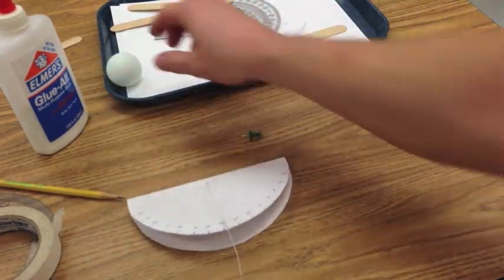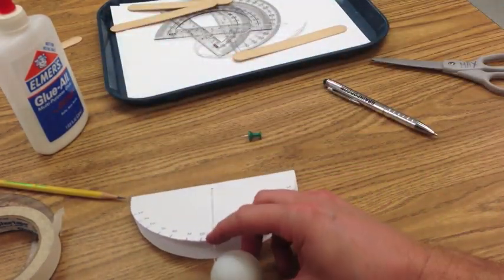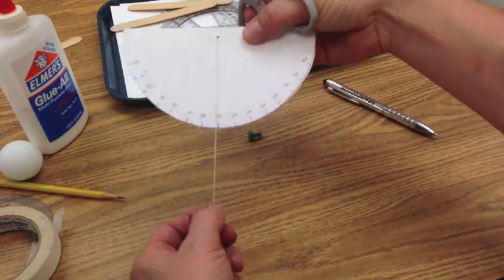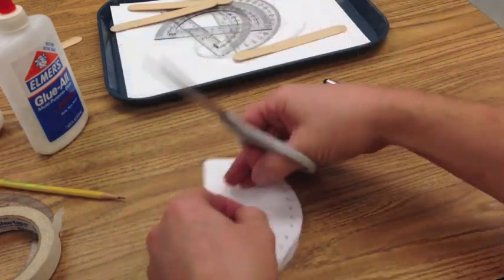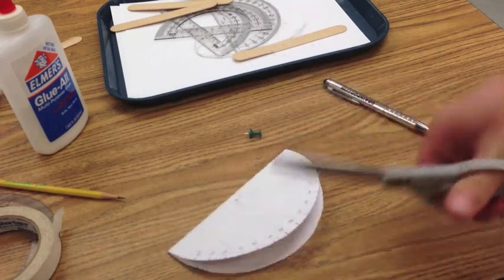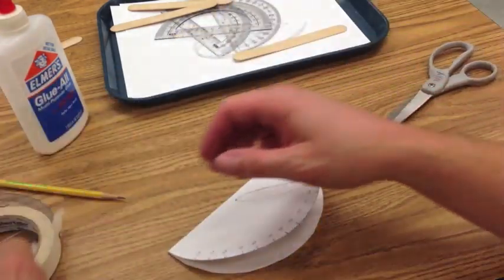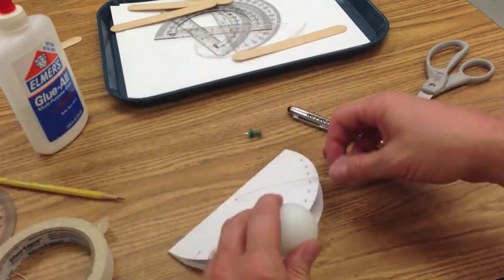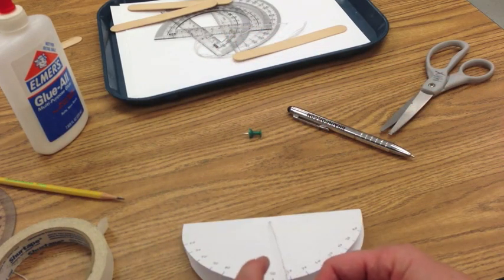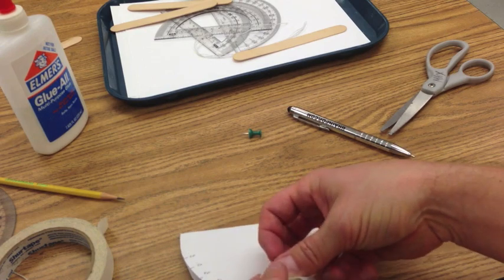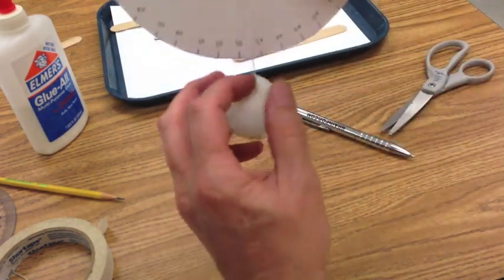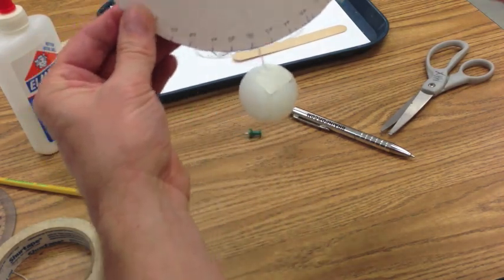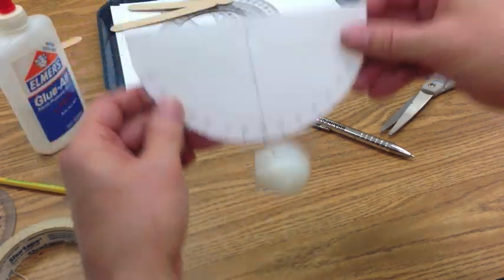So, you do that. Take your ping pong ball. About right there. Ping pong ball on another piece of tape. Put a piece of tape on the ping pong ball so that it hangs below like that.